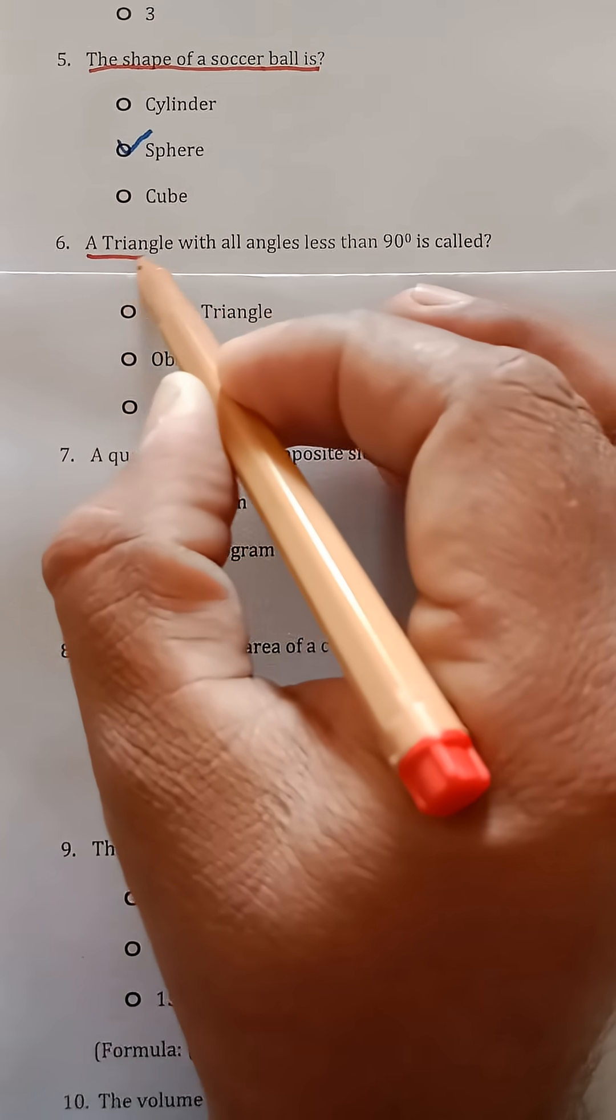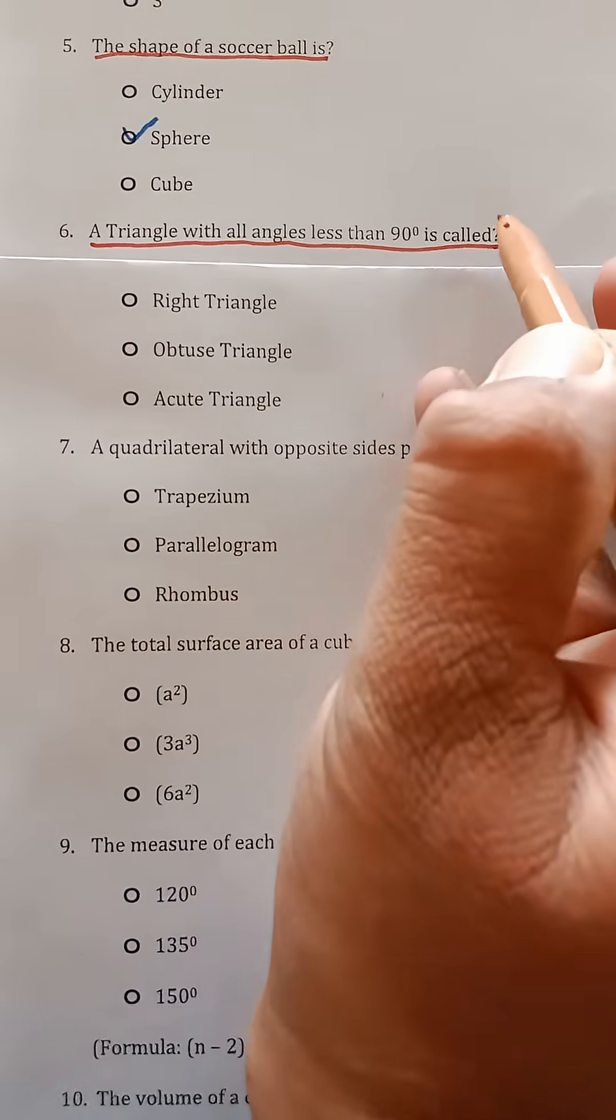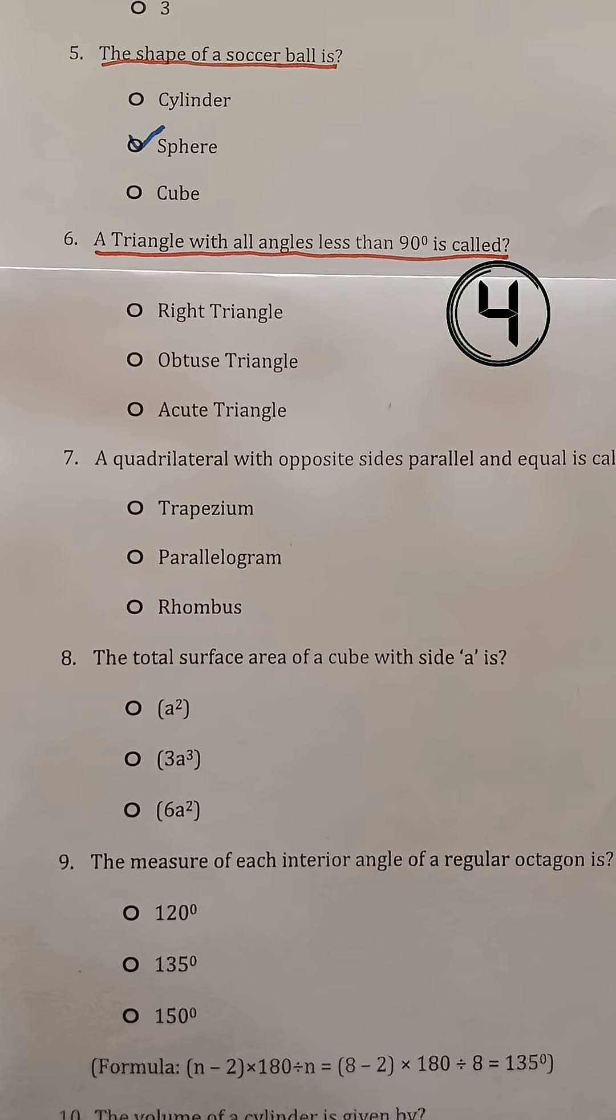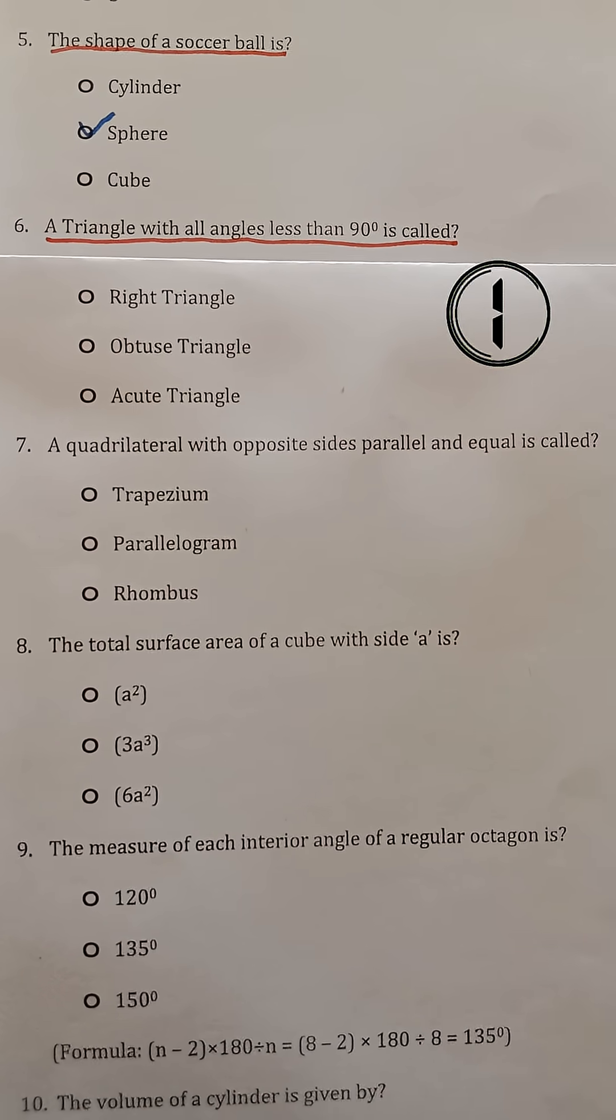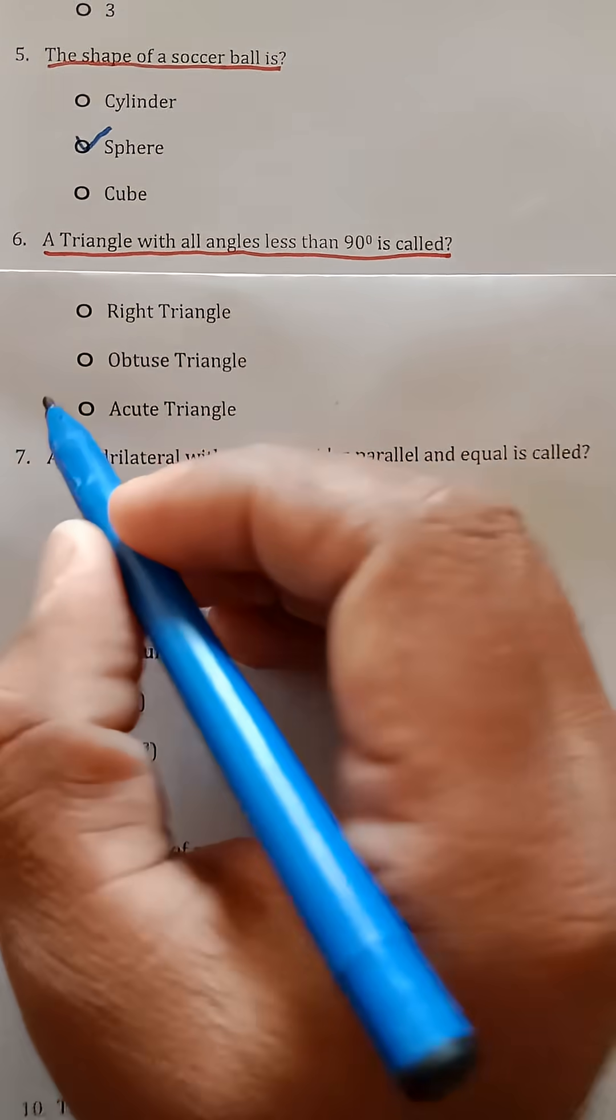Question 6. A triangle with all angles less than 90 degrees is called? Acute triangle.